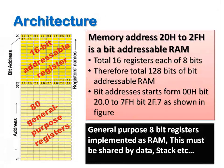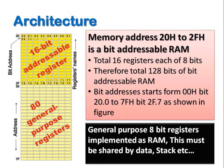The last unit is the general purpose RAM area. It is a group of 80 bytes which can be used for various operations such as storing data, storing intermediate data, or writing the stack. This brings us to the end of the first discussion of 8051 core architecture. Thank you for hearing this.